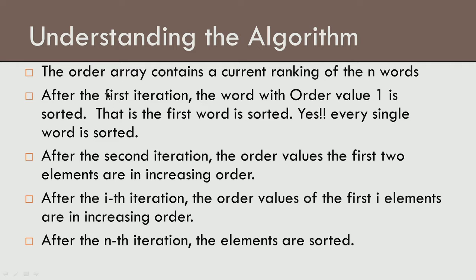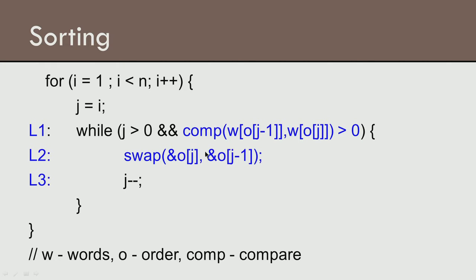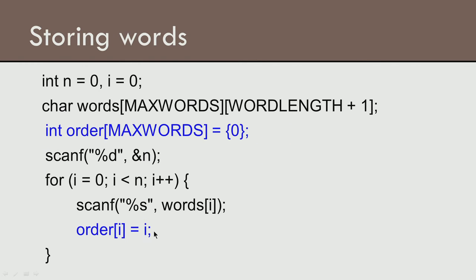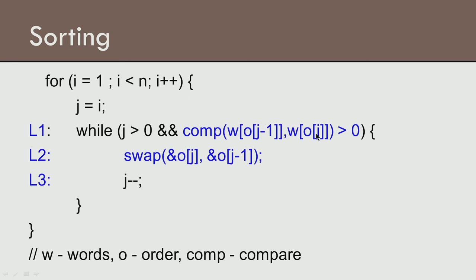Let us understand this algorithm. Initially we have a current ranking of the n words. At the end of the first iteration, the word with order value 1 is sorted. After the second iteration, the first two order values are in increasing order. After the i-th iteration, the order values of the first i elements are in increasing order. Consequently, after the n-th iteration, all elements are sorted. This is an algorithm to sort a given list of words. We have used insertion sort in a clever way — using the order array whose values are changed, and the comparison function for two words. Thank you.